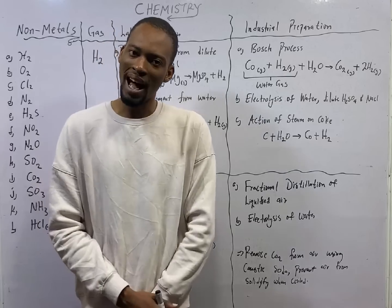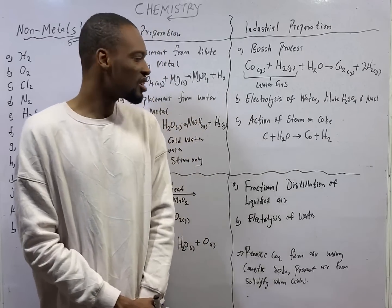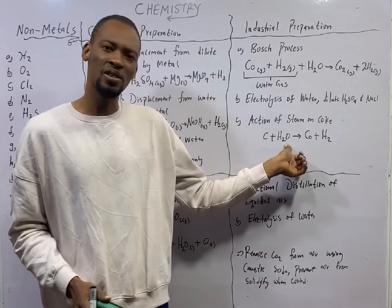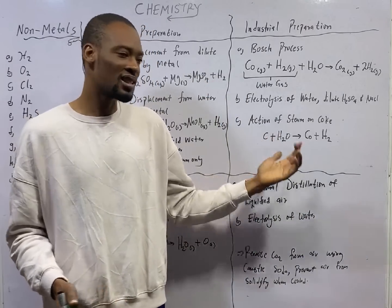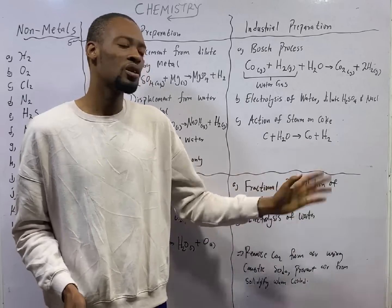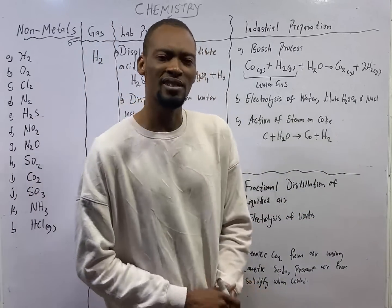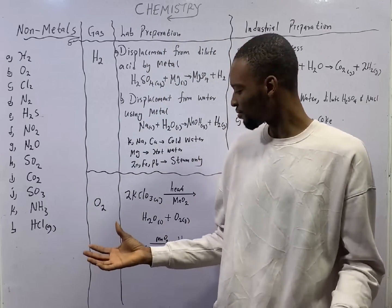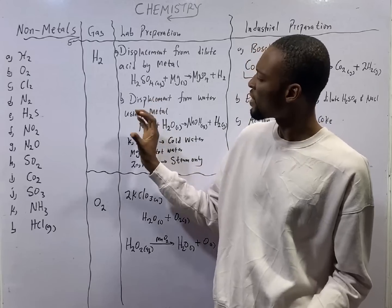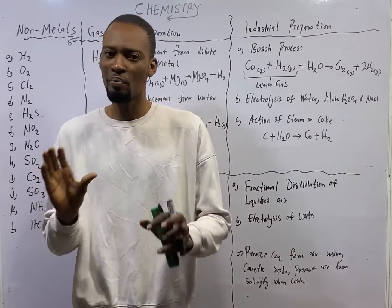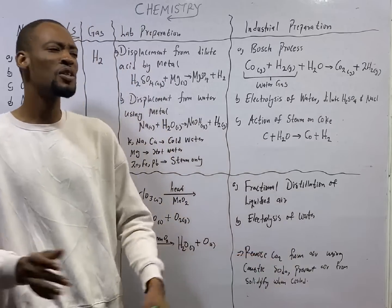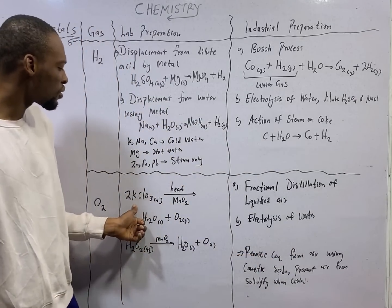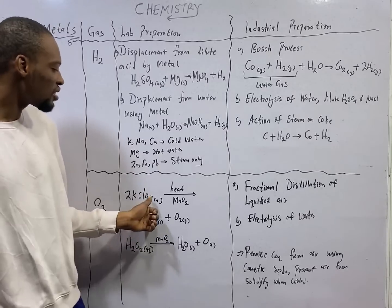And the third way to prepare hydrogen in the industry is the action of steam on coke. If water in gaseous state like steam reacts with coke, that is carbon, you form CO and hydrogen gas is given off. These are ways to prepare hydrogen. How about oxygen? The laboratory preparation of oxygen is a very interesting and popular one. The first way to prepare hydrogen in the lab is decomposition of potassium trioxochlorate.